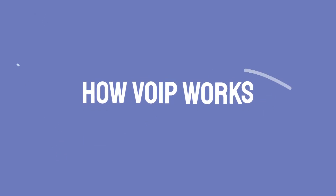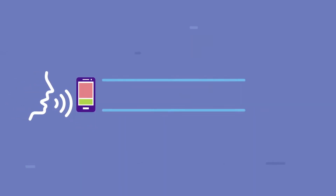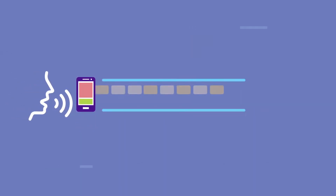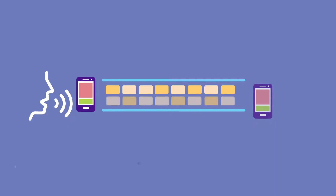Before we jump into why jitter occurs, let's quickly recap how VoIP works. VoIP converts voice into digital packets and transmits them from one endpoint to another. Once the packets reach the destination, they reassemble into voice, letting callers converse, all within a few milliseconds. But as these packets travel, some of them may arrive earlier than the others.